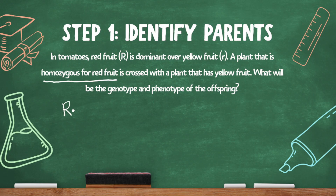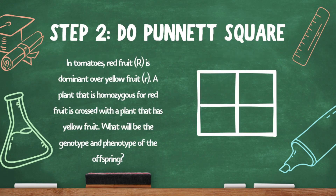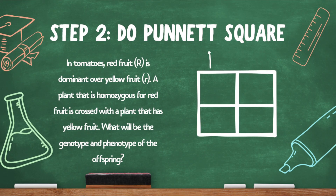Homozygous means that both alleles in the pair are the same, and since it has red fruit, they'll both be capital R. So one parent is capital R, capital R. The other parent has yellow fruit. Yellow is recessive, and in order for that recessive trait to be expressed, both of the alleles have to be recessive. So the other parent is little r, little r. Now that we know the parents' genotypes, let's fill out the Punnett square.